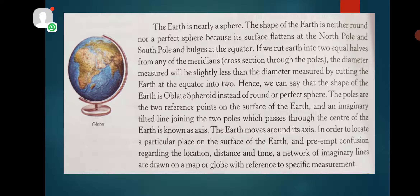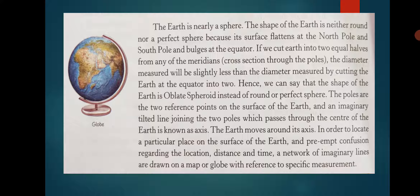You all know the earth is nearly a sphere. The shape of the earth is neither perfectly round nor a perfect sphere. Its surface flattens at the north pole and the south pole and bulges at the equator. It is slightly flattened at both the poles and bulges at the equator due to the centrifugal or outward force caused by the rotation of the earth.